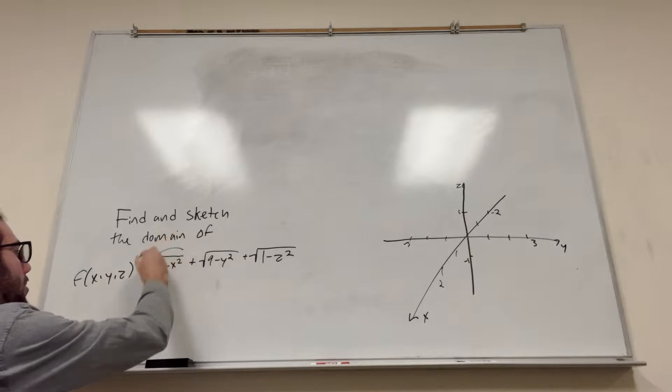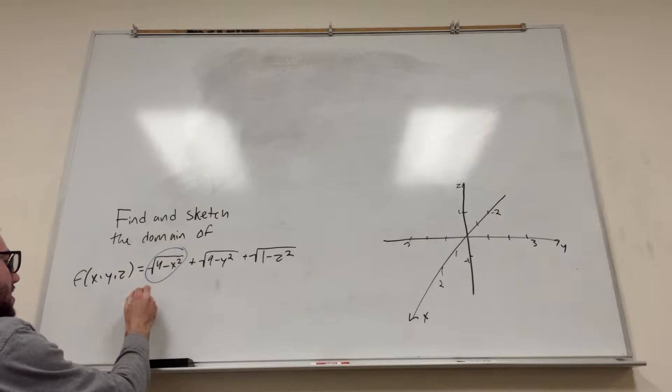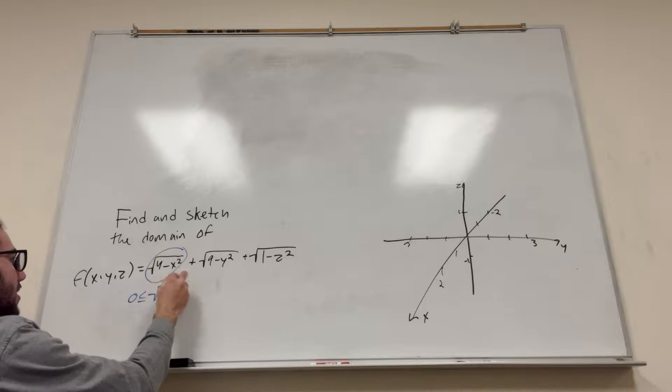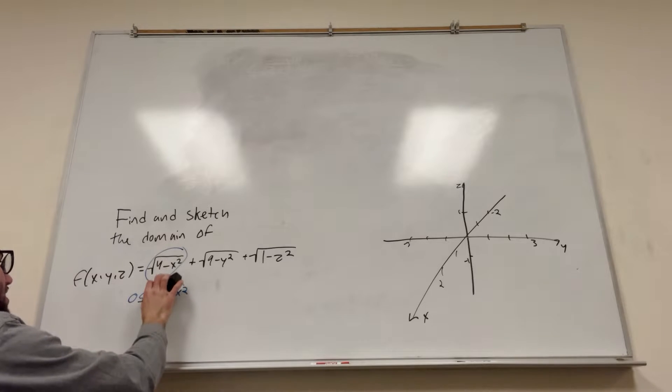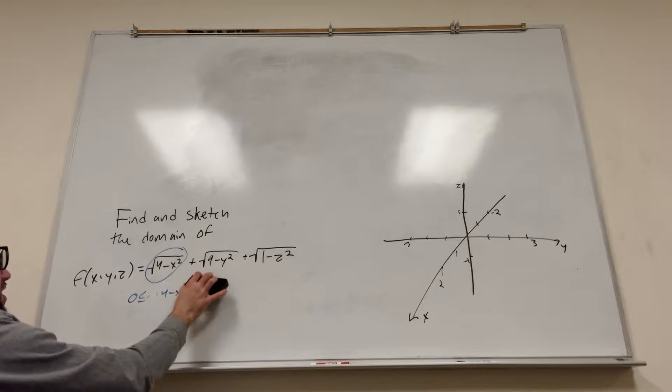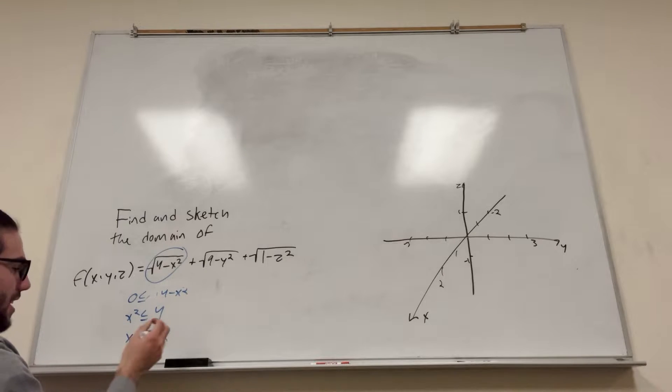So this part here, for example, we know that this has to be greater than or equal to zero. Otherwise, it's not defined. So let's write that: zero is less than or equal to square root of four minus x squared. You can get rid of the square root by squaring both sides. Then you can move the x squared over, so x squared is less than or equal to four. That would mean x is less than or equal to plus or minus two, which means negative two is less than or equal to x is less than or equal to two. So that's one domain right there.